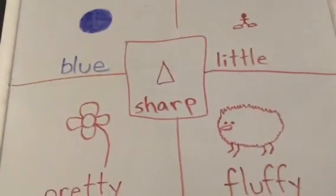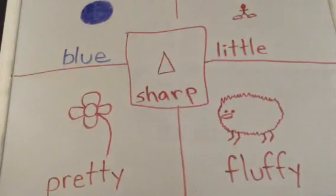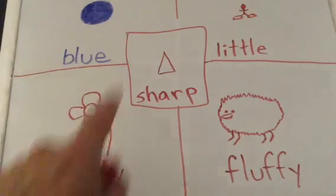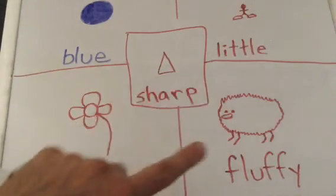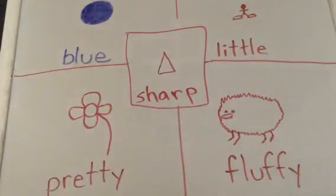So boys and girls, our five adjectives for today are blue, pretty, sharp, little, and fluffy. I can't wait to see what you come up with. Remember you don't have to do what I did. You can make up your own things. Thank you very much for joining me for ALD today boys and girls. You have a wonderful rest of your day. I will see you very soon. Bye bye.